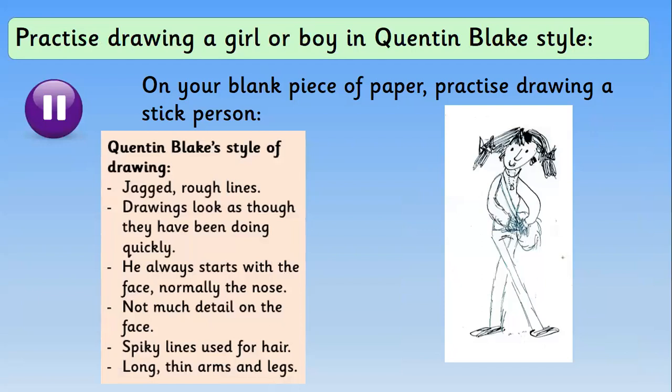I have had a go myself and it looks something similar to what I showed earlier. Now get your blank piece of paper and practice drawing a stick person — either a girl or a boy. Remember to use those rough lines. Try to make it look as if it's been done quickly, but don't rush, because you need these specific features: spiky lines for the hair, a rough body, long thin legs, and quite little flat feet. Start with the face — normally the nose, which is just a little hook — then two eyes, draw the face around it, then the body, and do the hair last. This is just a practice, so give it your very best go.